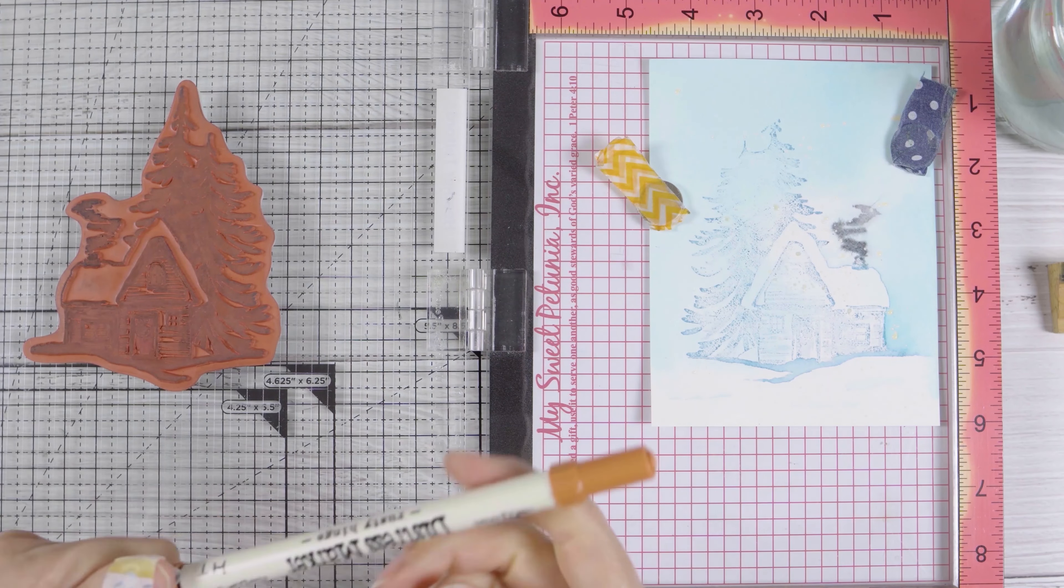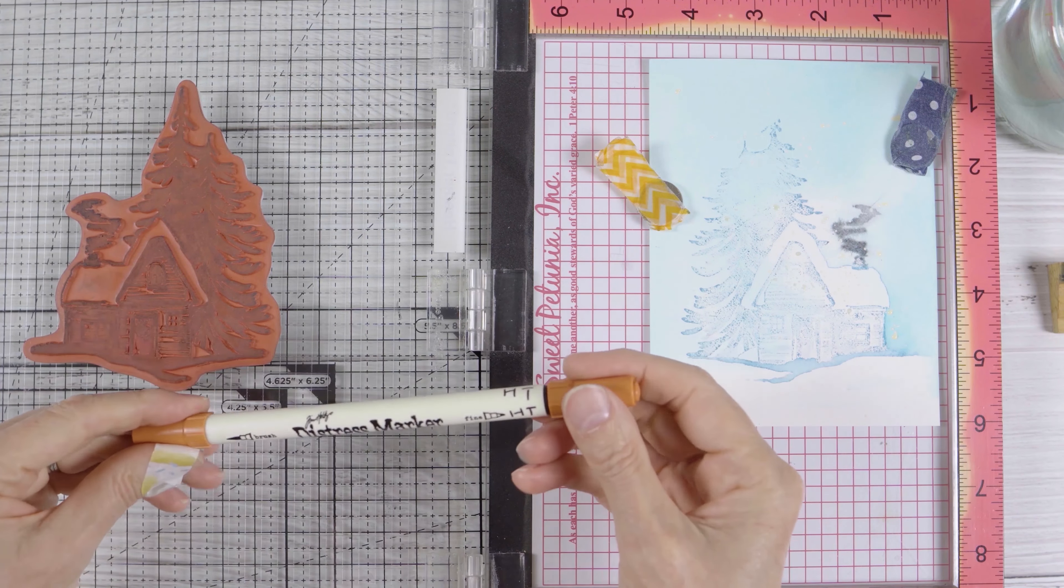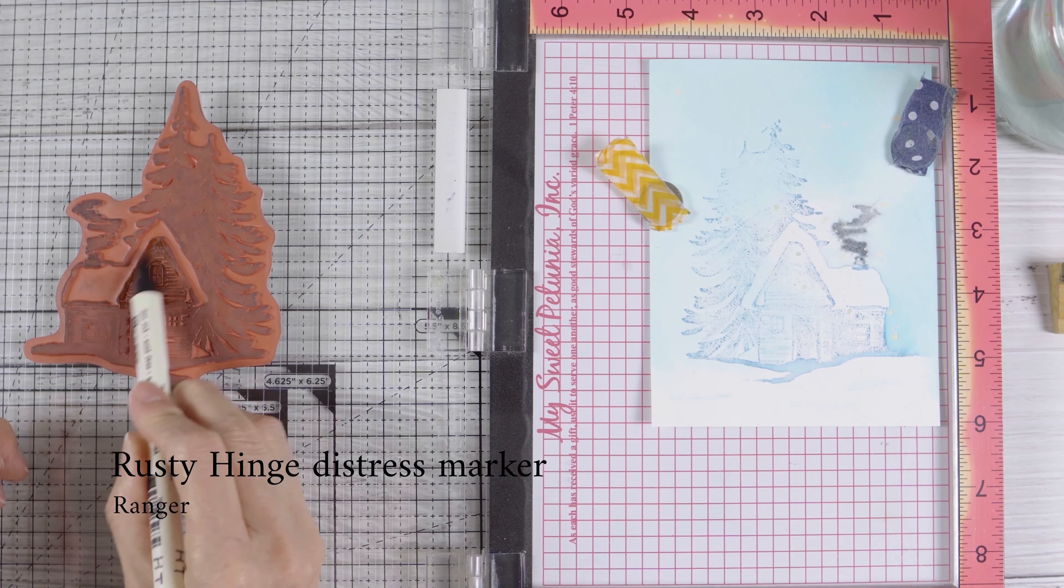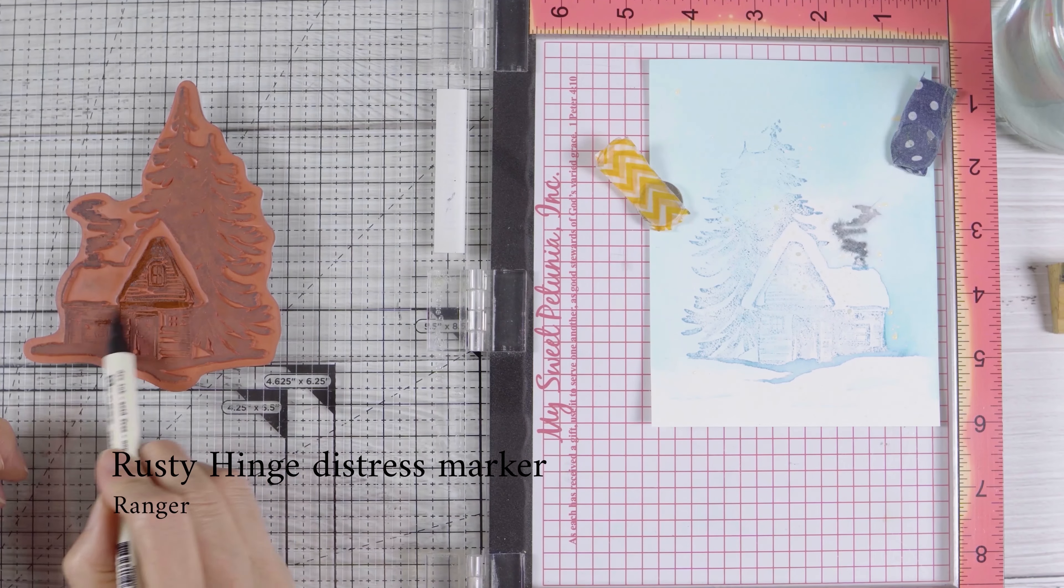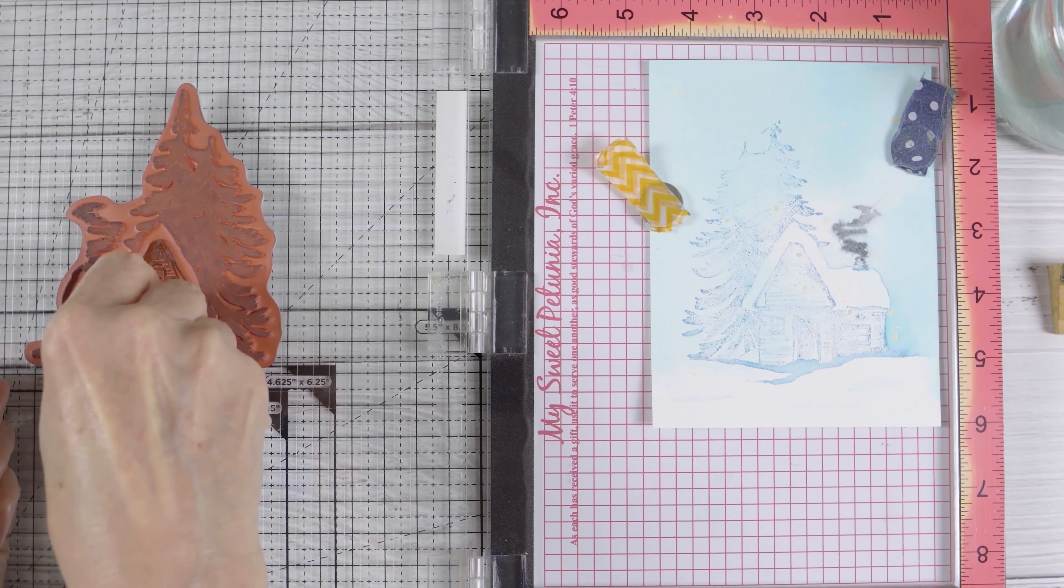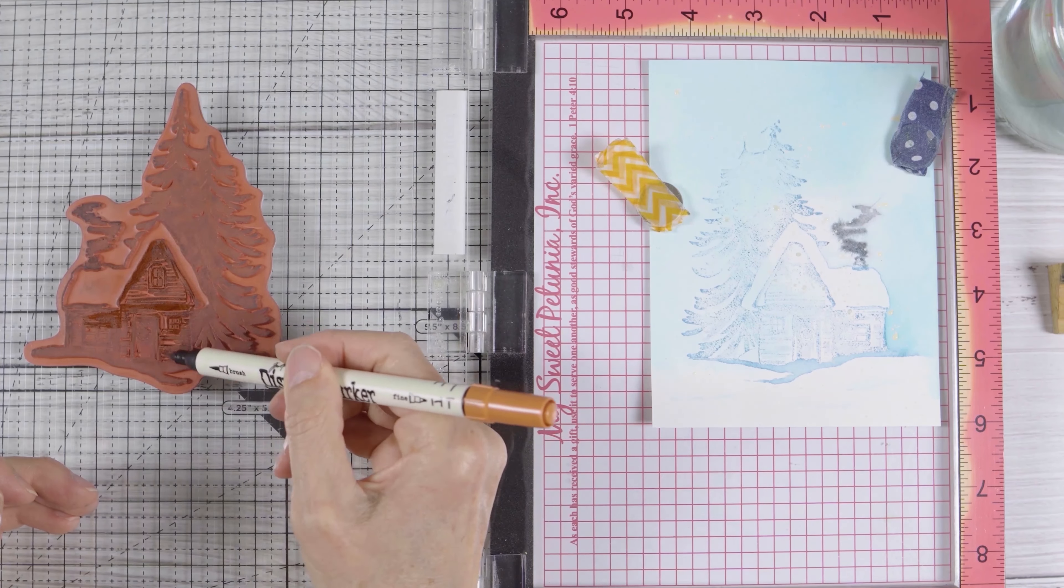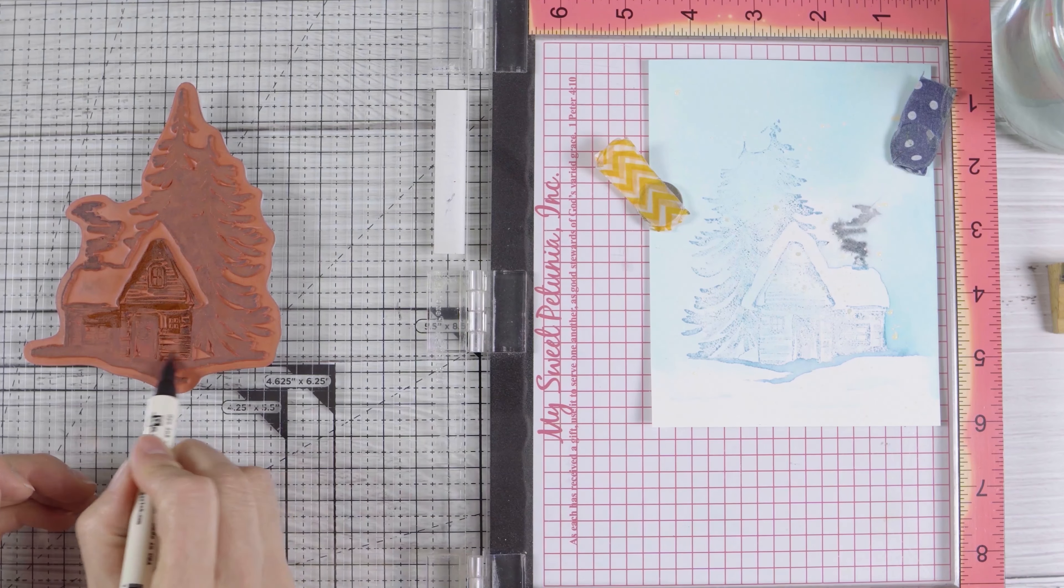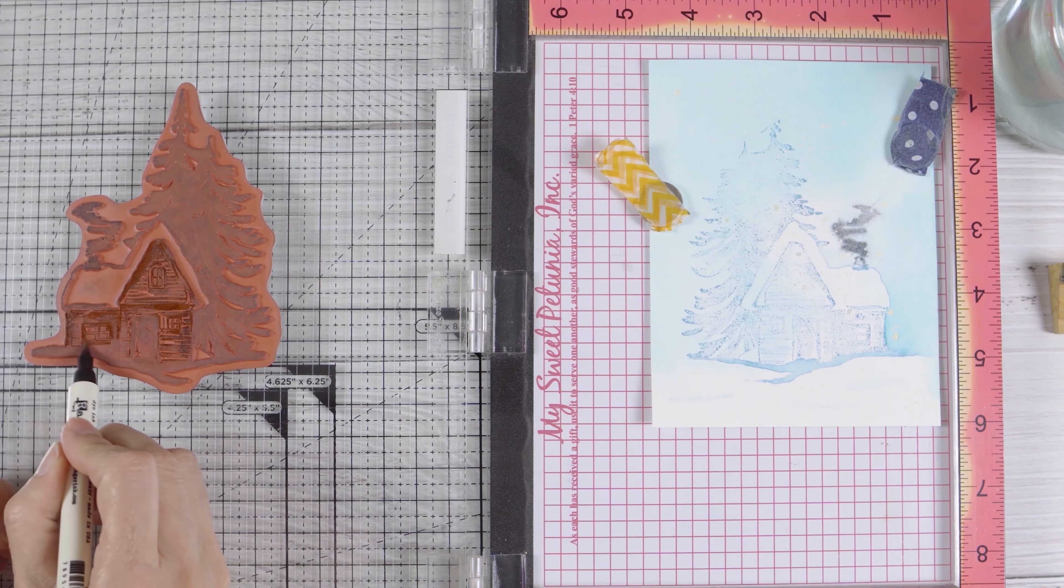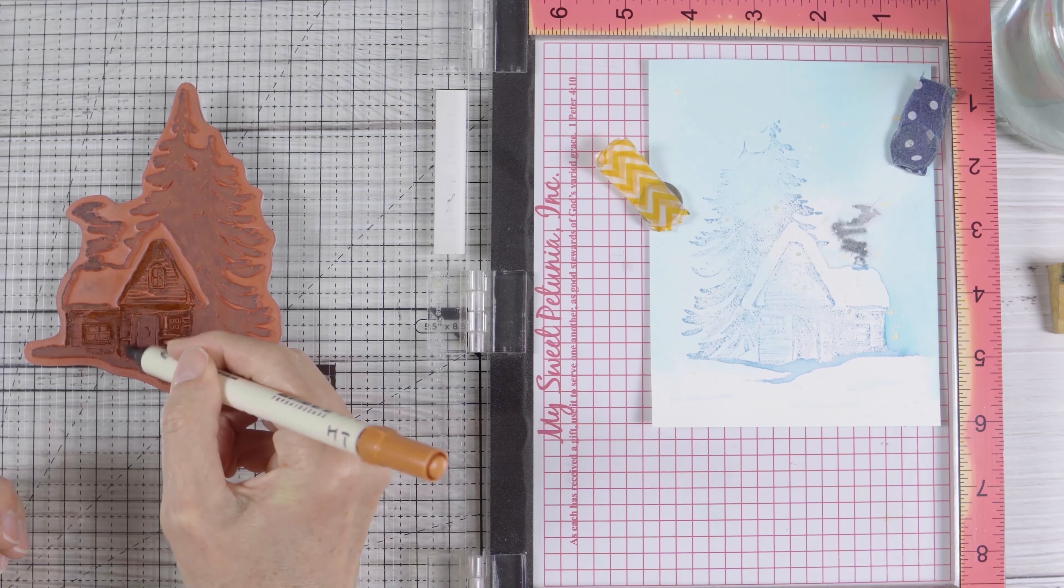Now it's time to work on the cottage. All of the cottage coloring is basically done with two colors. I chose rusty hinge and black soot and I'm working with the markers so that I can have a little more precision in placing my color. Mixing those two colors will give me a vintage kind of old look to the cottage, which is what I'm after.